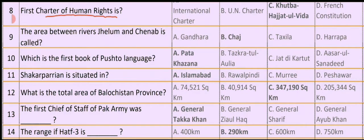First Charter of Human Rights is Option A. International Charter Option B. UN Charter Option C. Khutbah Hijjatul Bidha Option D. French Constitution. So the correct option is Option C: Khutbah Hijjatul Bidha.